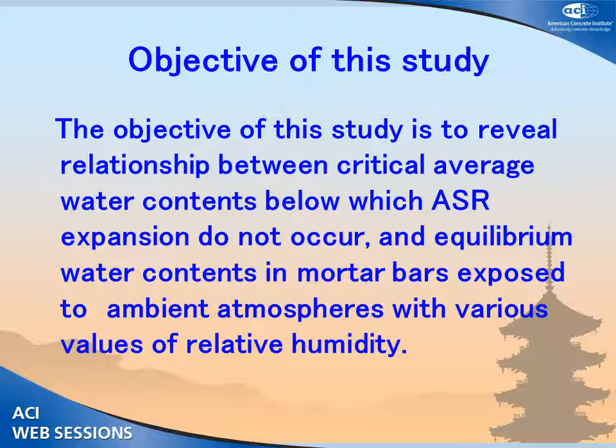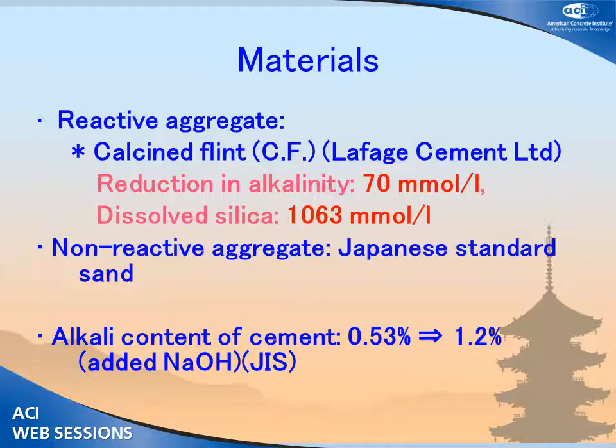Using this relationship, we will also discuss what part of the evaporable water in concrete ASR gel can absorb. The reactive aggregate used was calcined flint, produced by Rafae 7 Company. The results of the silicon reduction in alkalinity for the reactive aggregates are provided in this slide. It was found from these data that the aggregate was very reactive.